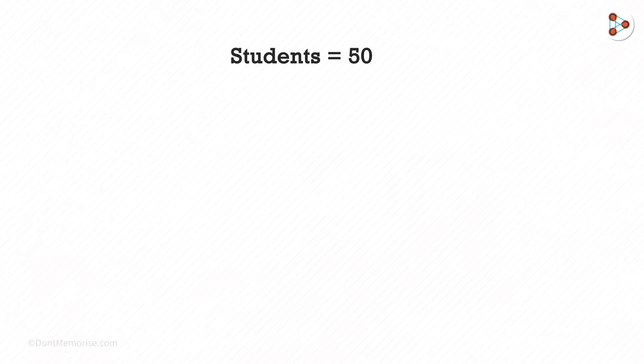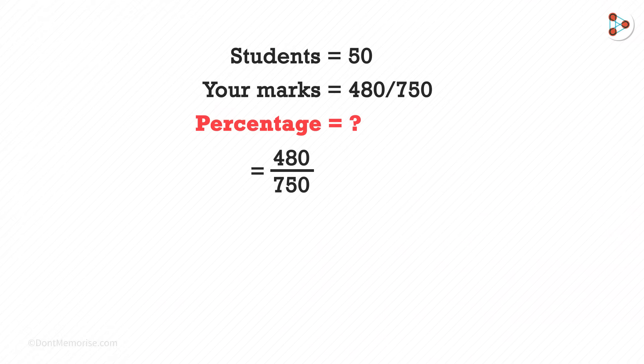Say there are 50 students in your class and your marks are 480 out of 750. What's your percentage here? Percentage would be 480 divided by 750 multiplied by 100 which is 64 percent.